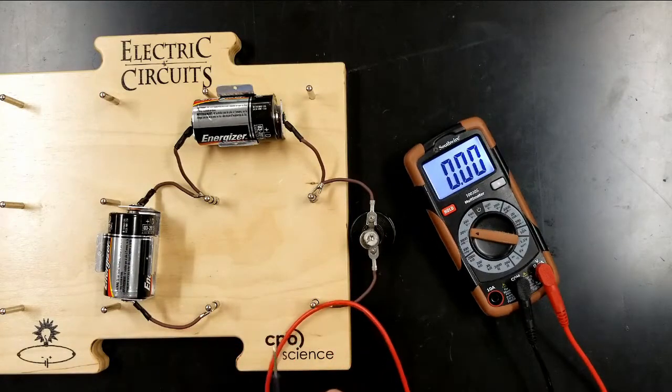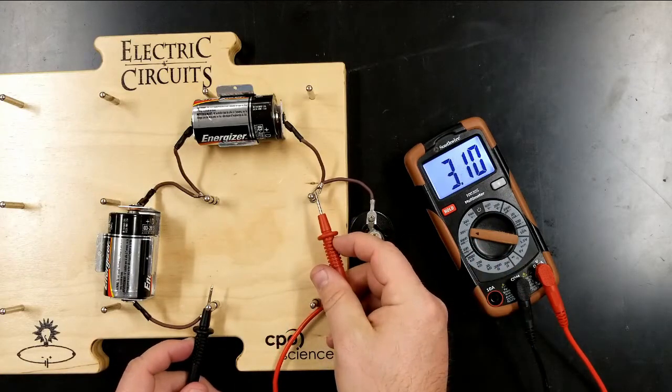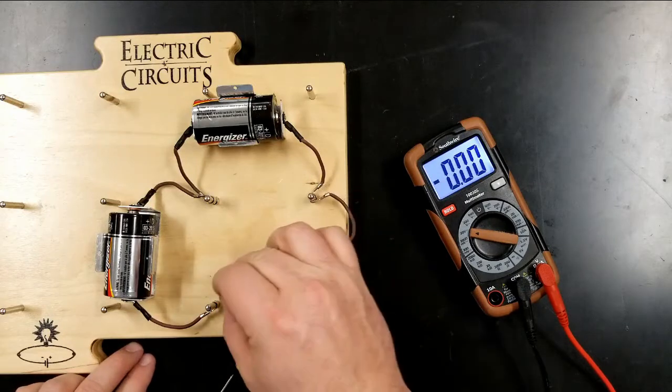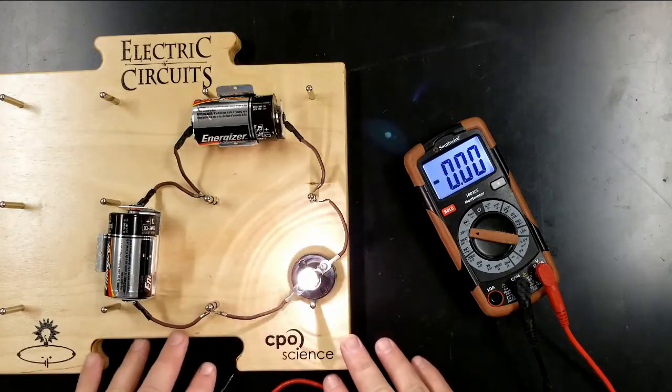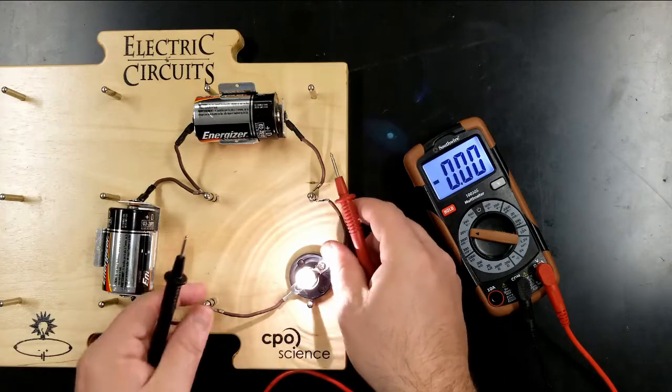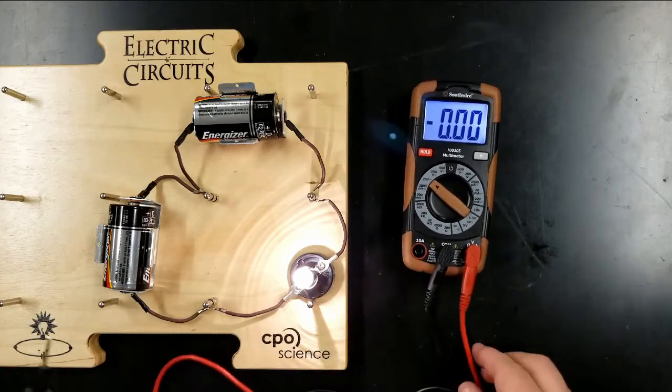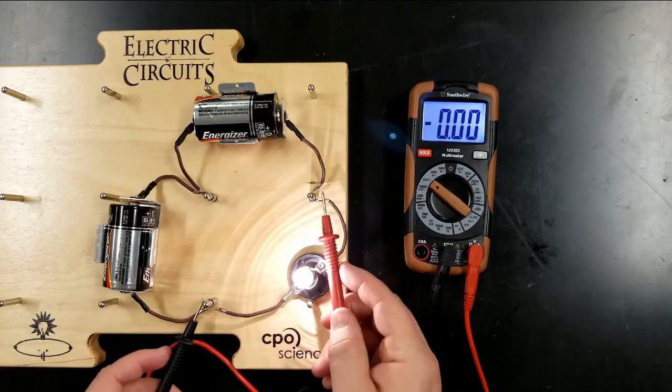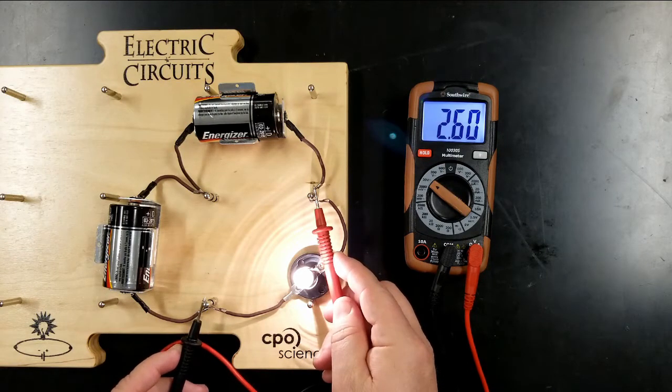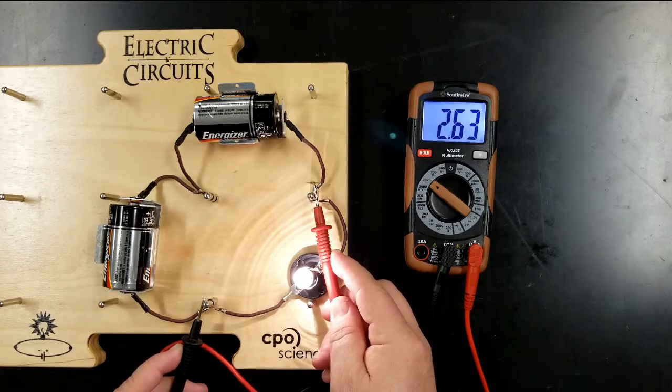So if I just put this across that system of batteries, I get 3.1 volts. When I then connect my light bulb, if I then measure across my light bulb in the same way, these wires are stiff so it's pulling my probes. So you'll notice that the voltage drop across my light bulb is a little bit less than 3.